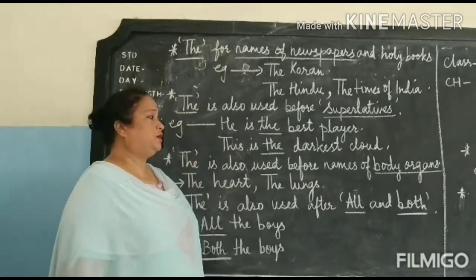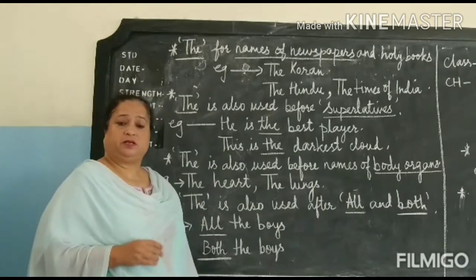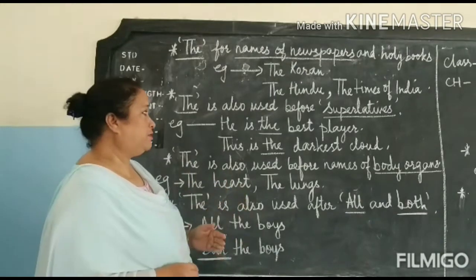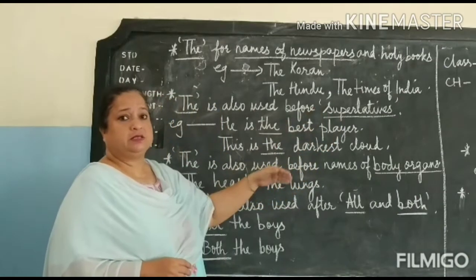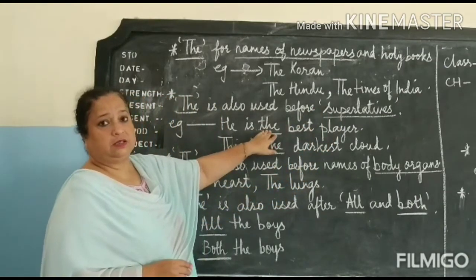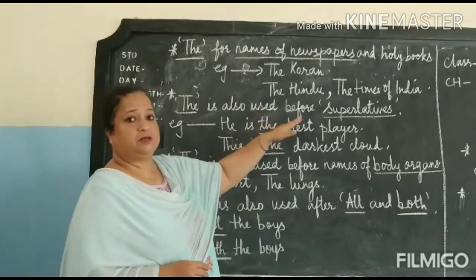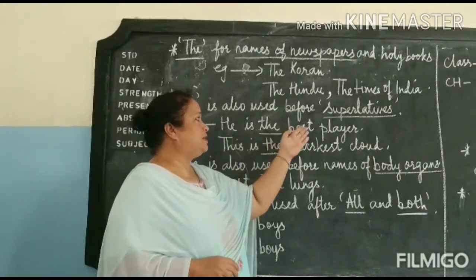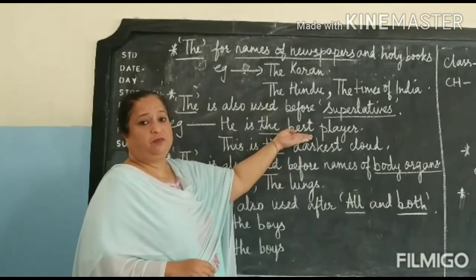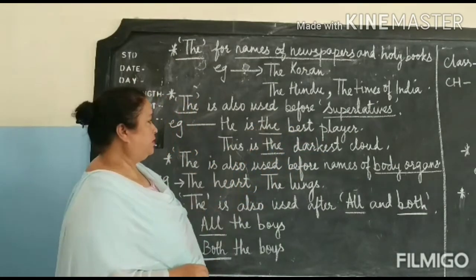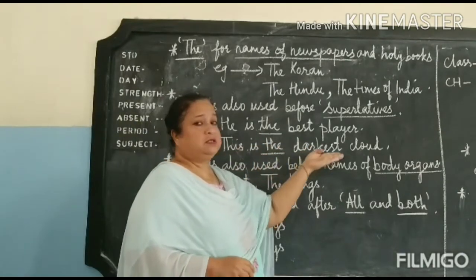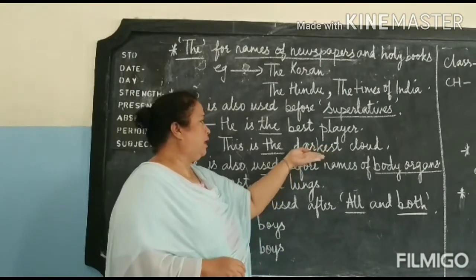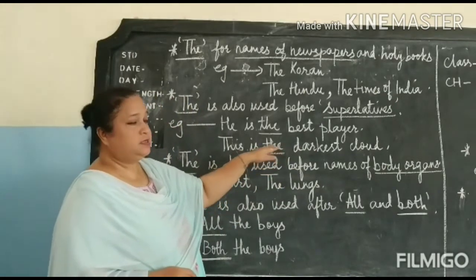'The' is also used for superlatives. We have already done the chapter on degrees of comparison — positive, comparative, and superlative. So when we use the superlative form in our sentences, we use the definite article 'the' in front of the superlative. For example: 'He is the best player.' Here 'best' is the superlative form, so we use 'the' in front of it. Another example: 'This is the darkest cloud.' Dark, darker, darkest — 'darkest' is the superlative form, and we use the definite article 'the'.